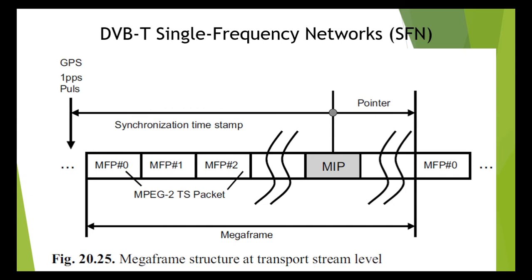The MIP packet contains a pointer to the start of the next mega frame in number of TS packets — look at figure number 25. Using this pointer information, each modulator is then able to start a mega frame at the same time. The length of the mega frame depends on the length of the guard interval and on the bandwidth of the channel. The narrower the channel, the longer the COFDM symbols, since the subcarrier spacing becomes very small. Every DVB-T modulator can now be synchronized by means of the information contained in the MIP packets.